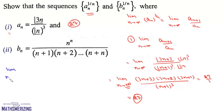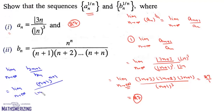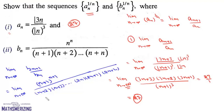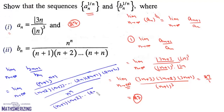So the answer to this first one is 27. Now for the second one, we write this as the limit as n tends to infinity of b_(n+1) upon b_n. Here b_(n+1) is (n+1)^(n+1) upon (n+2)(n+3)...(2n+1)(2n+2), divided by b_n, and b_n is n^n upon (n+1)(n+2)...2n.